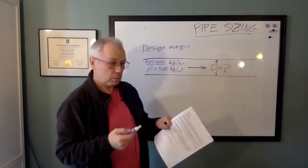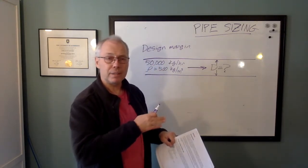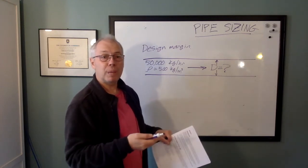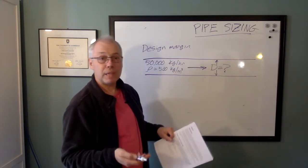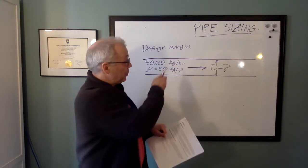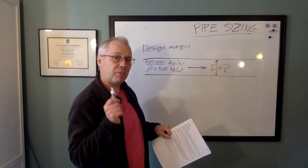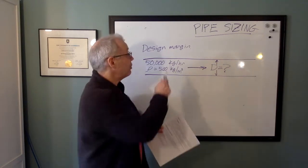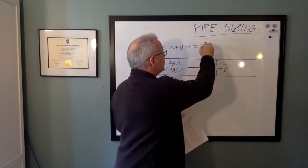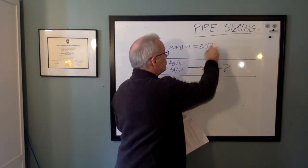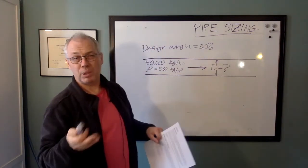So what sort of design margin do we need? We could size our piping for 50,000 kilograms an hour, and it will work fine today. But five years from now, when the plant manager says, let's increase the throughput of the plant by 30%, your perfectly good pipe may not be big enough. So we always have to consider a bit of design margin. In our case, we'll consider 30%. So we don't have a flow rate of 50,000, it's 50,000 plus 30%.